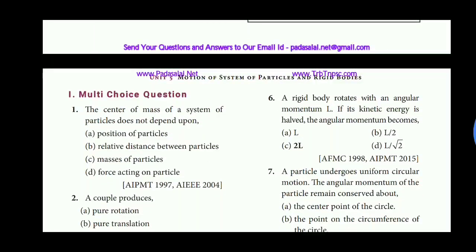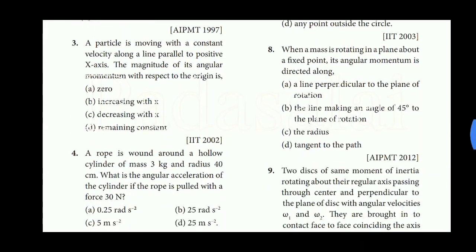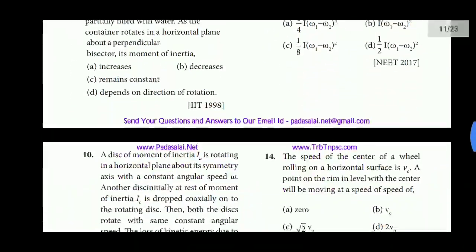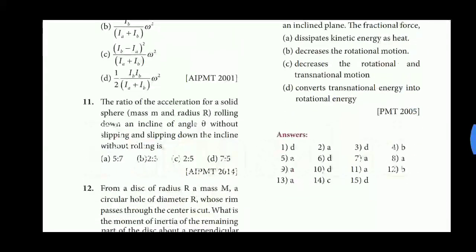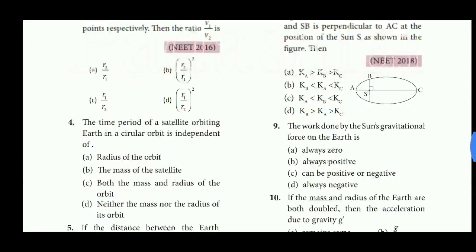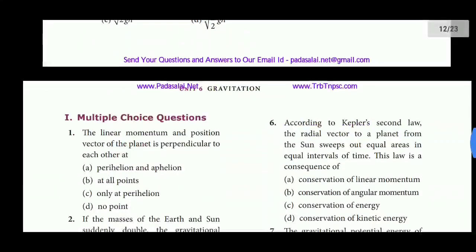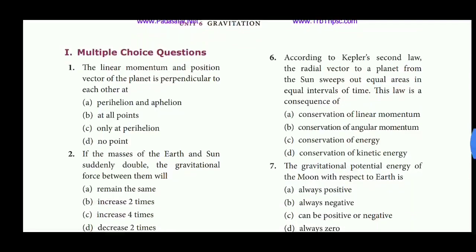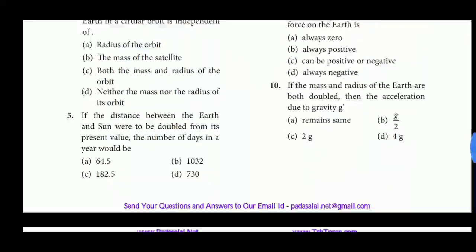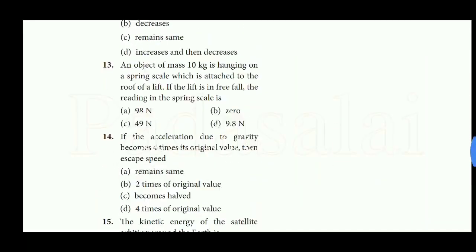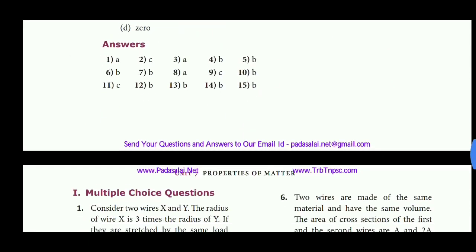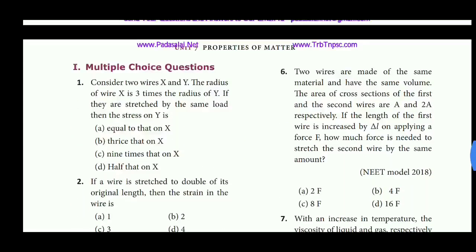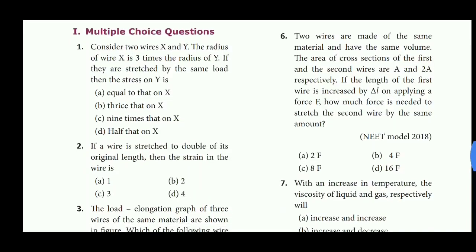Unit 5: Motion of System of Particles and Rigid Bodies, multiple choice questions — 51 one-mark questions. At the sixth lesson: Gravitation. And the seventh unit: Properties of Matter, multiple choice questions.